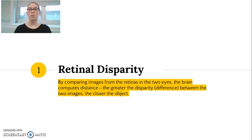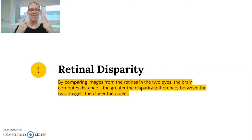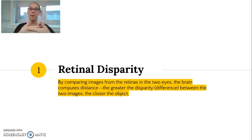With retinal disparity, the greater the difference, the closer the object is to you. The definition can be a little confusing, but if you think about it or try out a couple of things, you'll be able to understand it. You have two eyeballs situated in two different locations on your face, and because they have two different geographic locations, they actually receive slightly different images. Your brain takes those two slightly different images and overlaps them to give you one cohesive scene of the world in front of you.